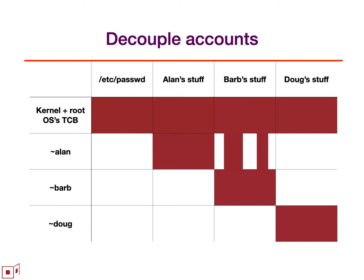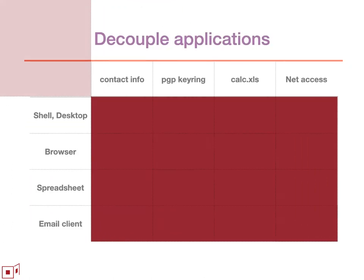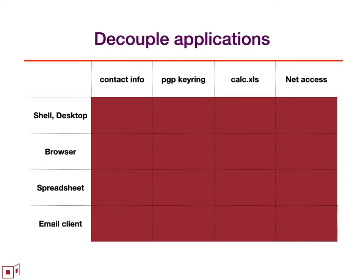Having reduced risk this much, how can we reduce risk yet further? Let's focus in on what Doug is doing in the Doug account — the box in the lower right. If Doug is running a conventional operating system with conventionally installed applications, then each of Doug's applications runs as Doug. Therefore, anything that Doug is allowed to do, any of those applications can do. So all of Doug's resources are vulnerable to any of Doug's applications within the Doug box — the attack surface is again complete.